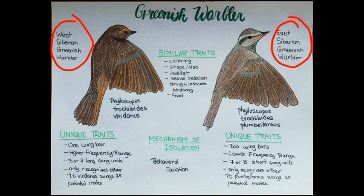The unique traits of P.T. birdenus include one wing bar, which birds use to communicate. They have a high frequency range in their songs, have three or four long units of song, and only recognize other P.T. birdenus songs as potential mates.